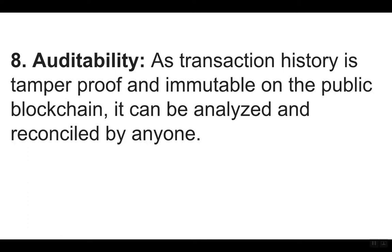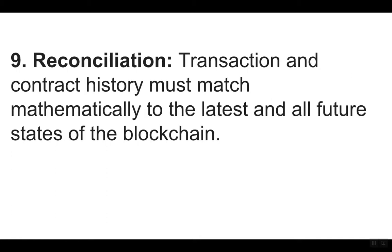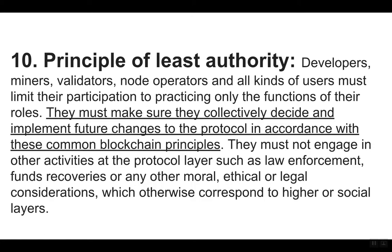Eight: auditability — as transaction history is tamper-proof and immutable on the public blockchain, it can be analyzed and reconciled by anyone. Nine: reconciliation — transaction and contract history must match mathematically to the latest and all future states of the blockchain. Ten: principle of least authority — developers, miners, validators, node operators, and all kinds of users must limit their participation to practicing only the functions of their roles. They must make sure they collectively decide and implement future changes to the protocol in accordance with these common blockchain principles.